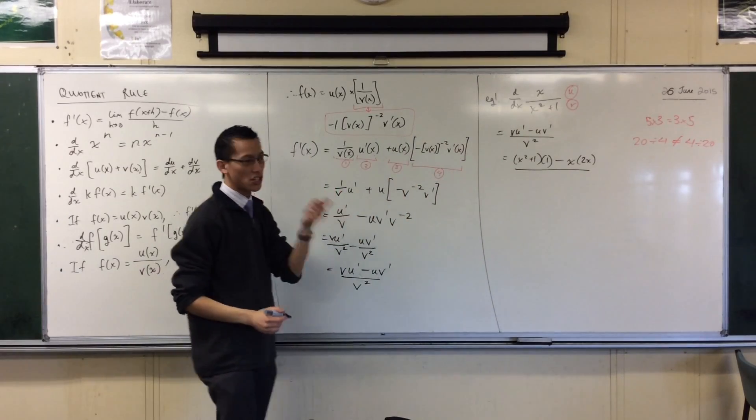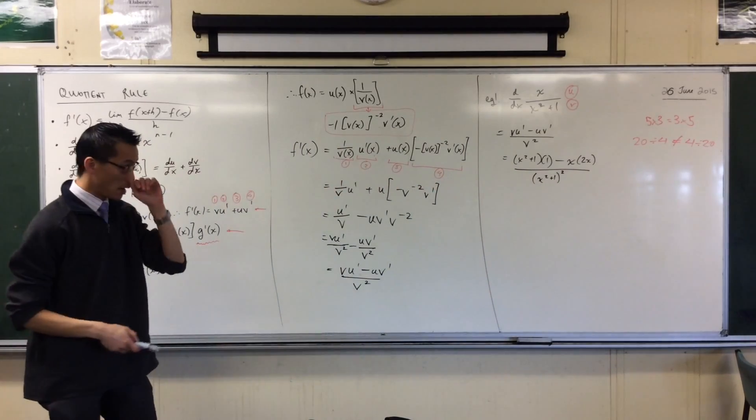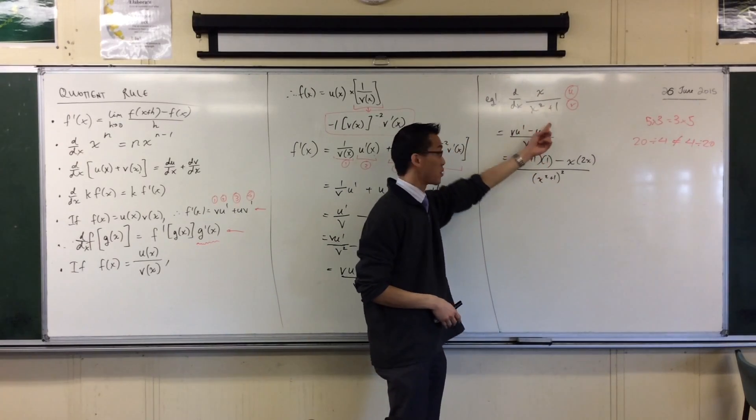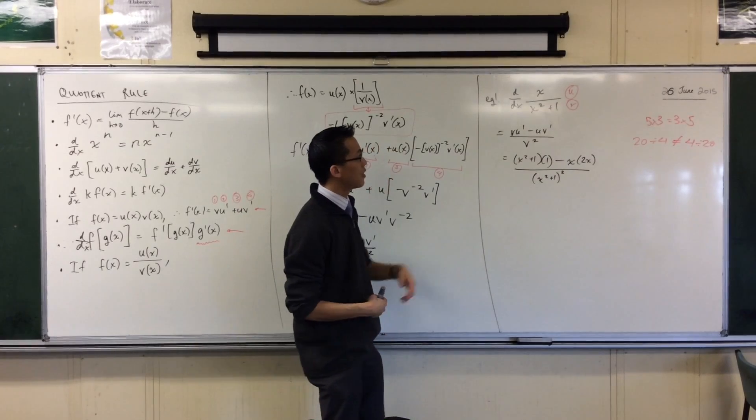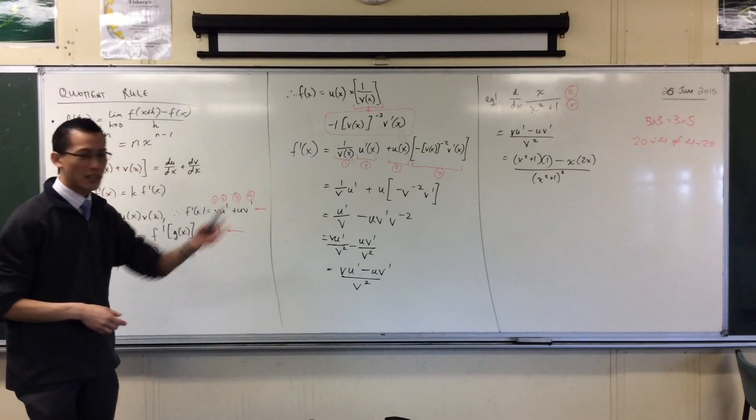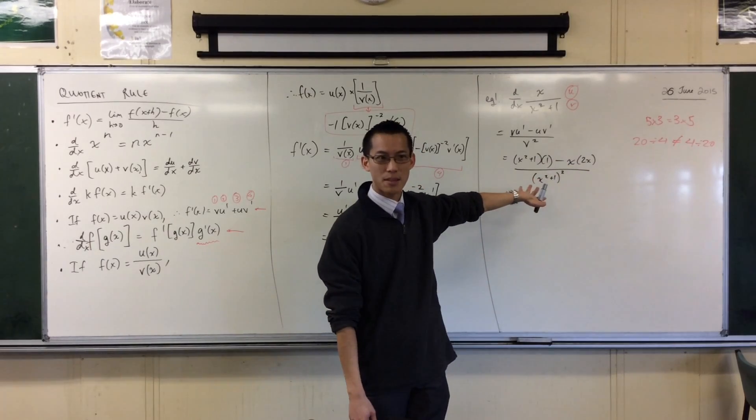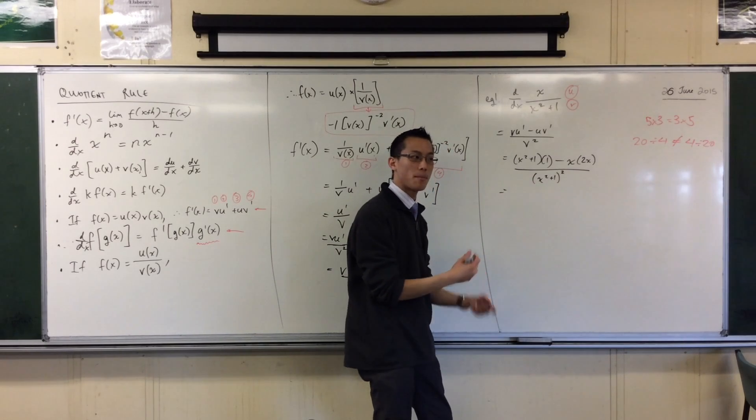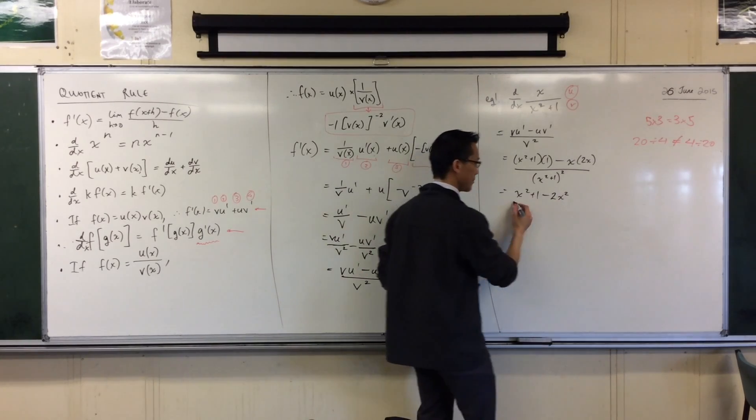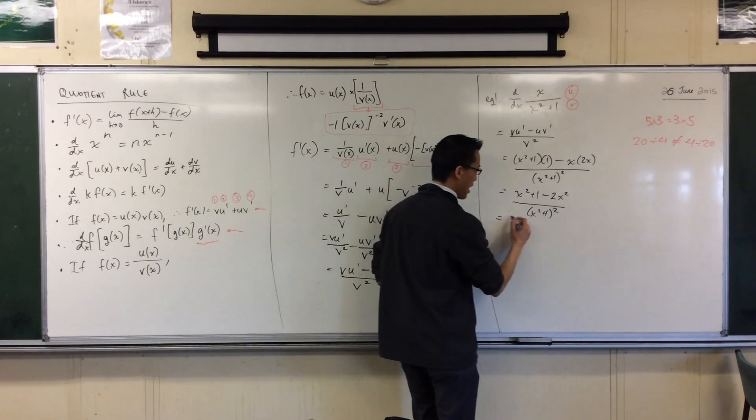All over, and then this guy on the bottom gets squared. Now traditionally, we don't really muck around with this guy. The denominator is important, but the numerator is kind of more important. The numerator gives you like roots and stuff like that. So this guy in the denominator, just leaving him like that is generally no problem. Let's expand the top and then we can tidy this thing up. X squared plus 1 minus 2X squared, all over. I gained nothing out of expanding him. And so now I'm done.